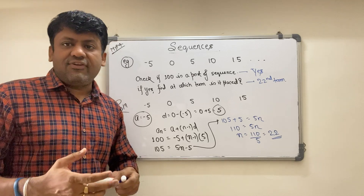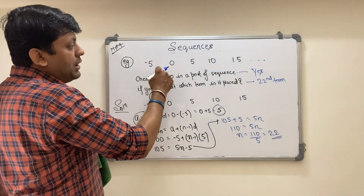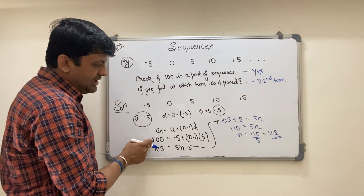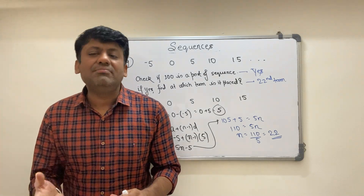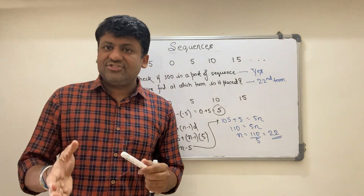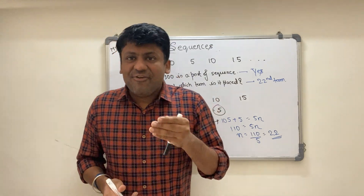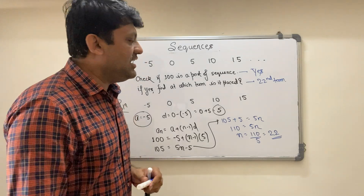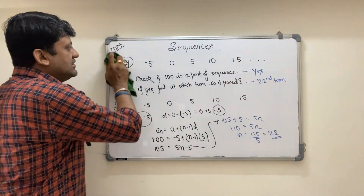Now, how do you know when a number is NOT in the sequence? If I check 99 or 98 instead of 100, the value of n will come out as a decimal or fraction, not an integer. Think about it: can a term position be a fraction? No. Just like rankings — first, second, third — you can never have a 2.5th place. So if n is an integer, the number is in the sequence. If n is not an integer, it is not in the sequence.